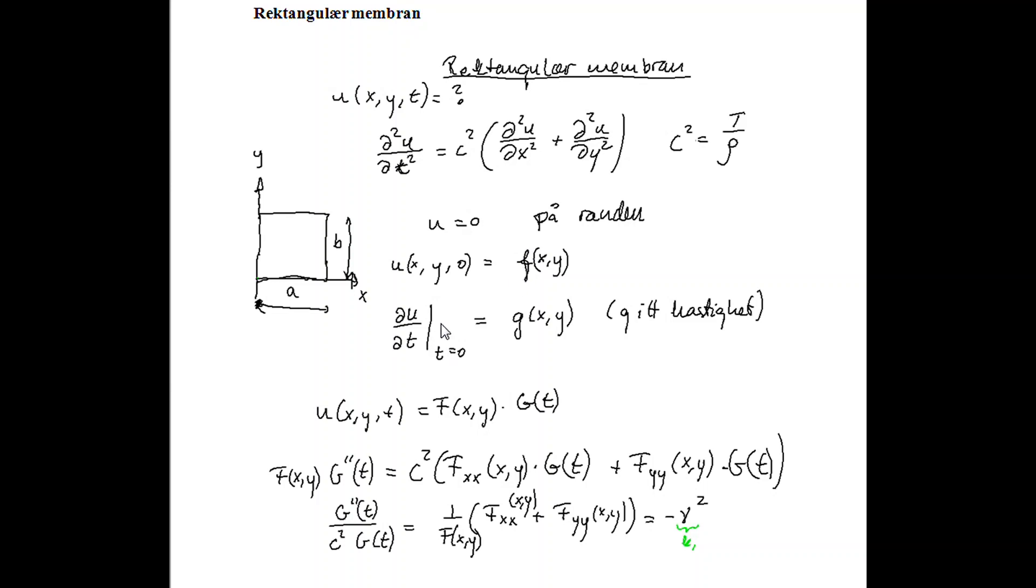Moreover, we call the initial velocity G of X, Y. So the velocity at the starting point is given.